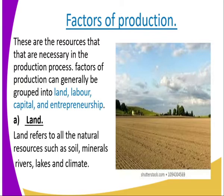Factors of production can generally be grouped into four. There is land, labor, capital, and entrepreneurship. So those are the four, and we are going to look at each one at a time.